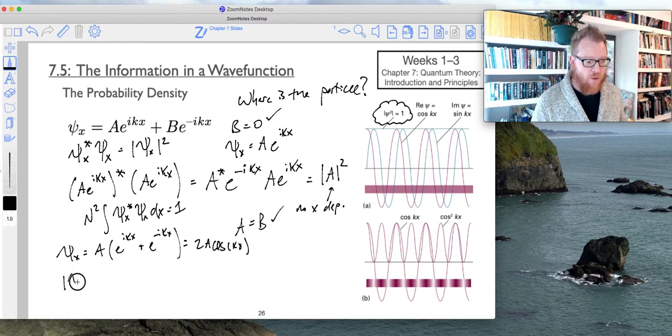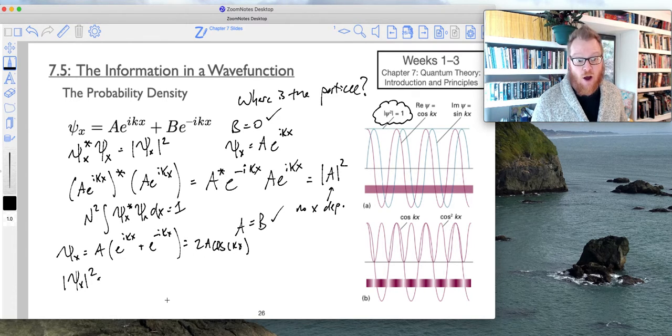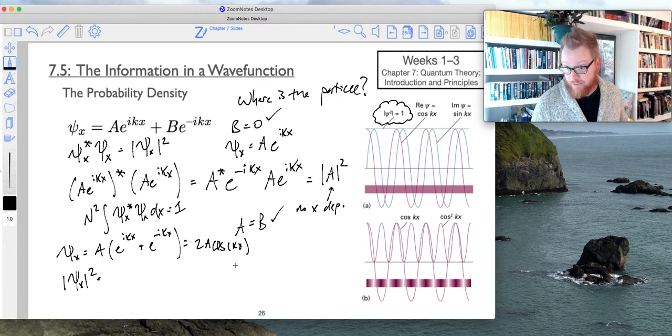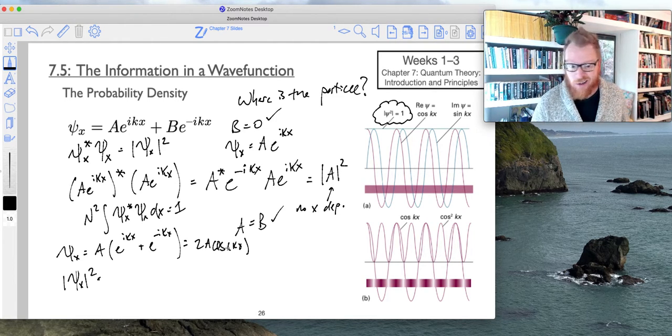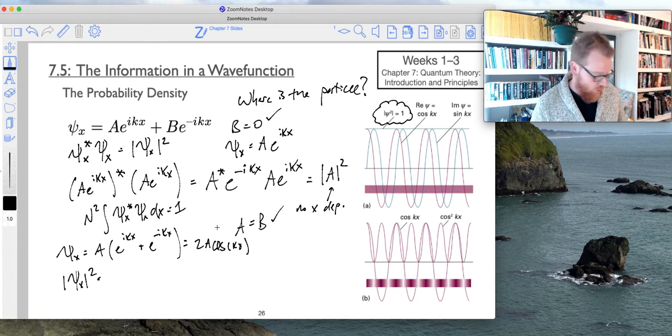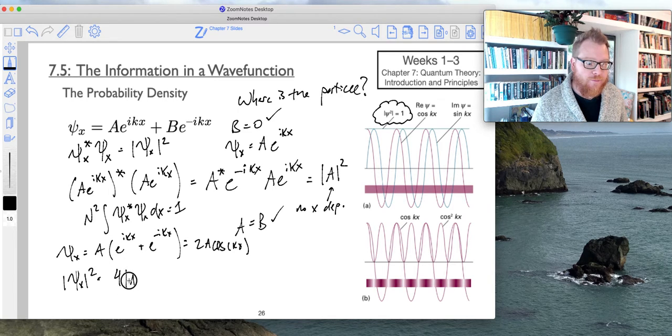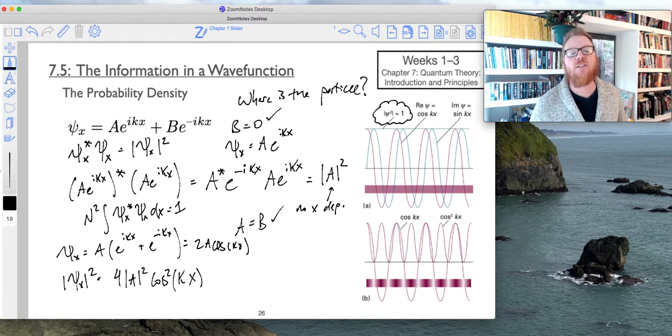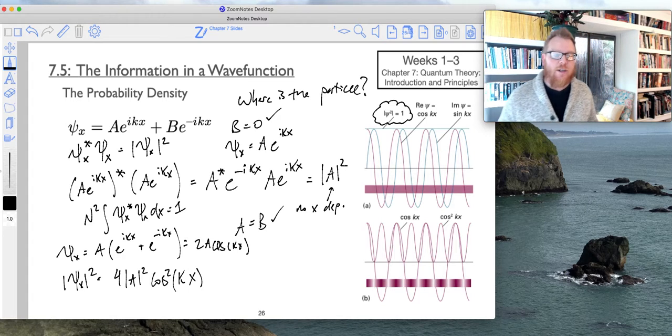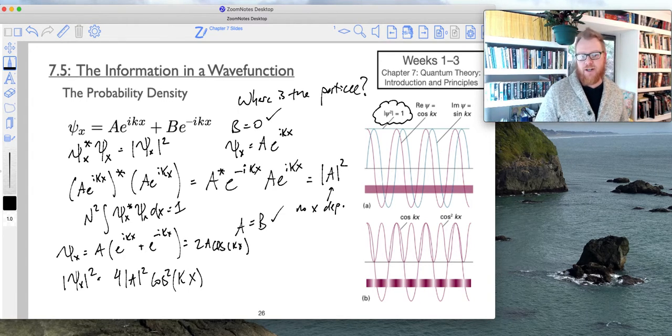And now if I were to carry out the square modulus on this 2a cosine kx, there's no imaginary numbers in this cosine function, so the square modulus of this will be truly just a square. So that will go as 2 squared a squared cosine squared, that's all squared. So that will be 4 times the quantity a squared times cosine squared kx.